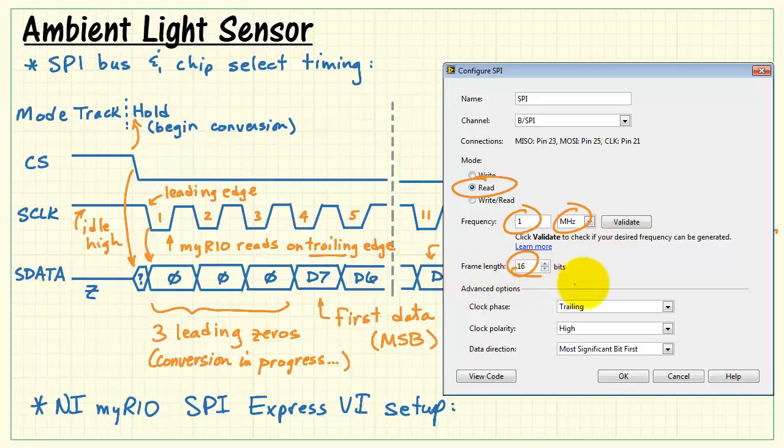Frame length needs to be 16 bits. Clock phase is trailing, indicating that MyRio reads serial data on the trailing edge. Clock polarity is high to reflect the fact that serial clock should be high in the idle mode. And data direction is most significant bit first.